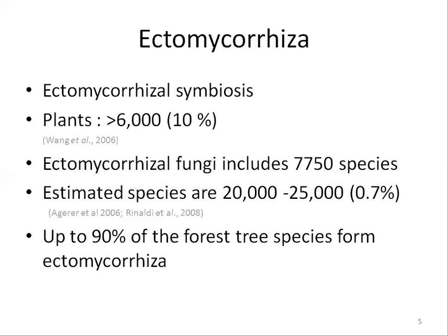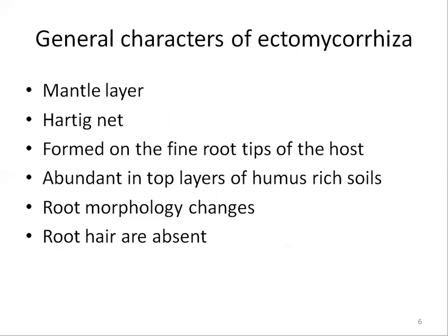Up to 90 percent of forest tree species form ectomycorrhizal associations, and an individual tree may have up to 15 or more different fungal ectomycorrhizal partners at one time. Ectomycorrhizal roots, also called ectotrophic associations or sheathing mycorrhizals, are characterized by the presence of a mantle and Hartig net, though both structures may not always be well developed.